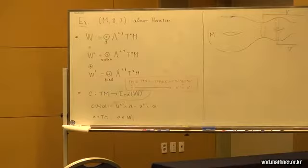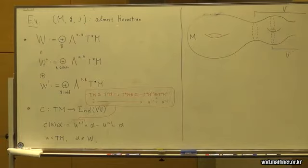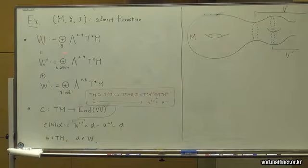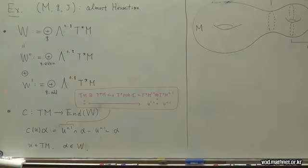A typical example is as follows. Consider an almost Hermitian manifold: M is a manifold, G is a Riemannian metric, and J is an almost complex structure compatible with the Riemannian metric. Then the exterior algebra bundle of the (0,•) part of the cotangent bundle decomposes into two parts — degree 0 (even part) and degree 1 (odd part) — with the Clifford multiplication given accordingly.